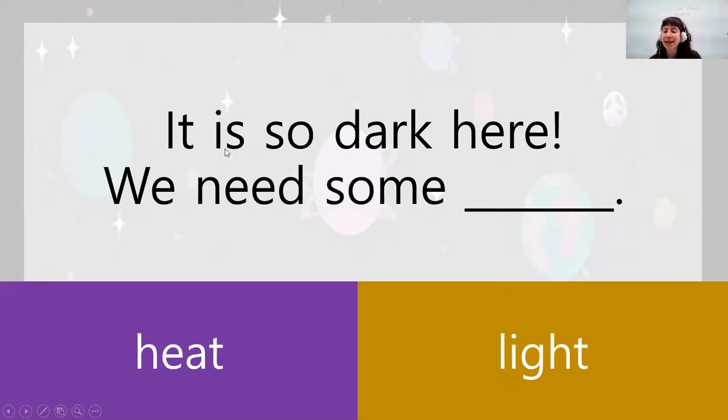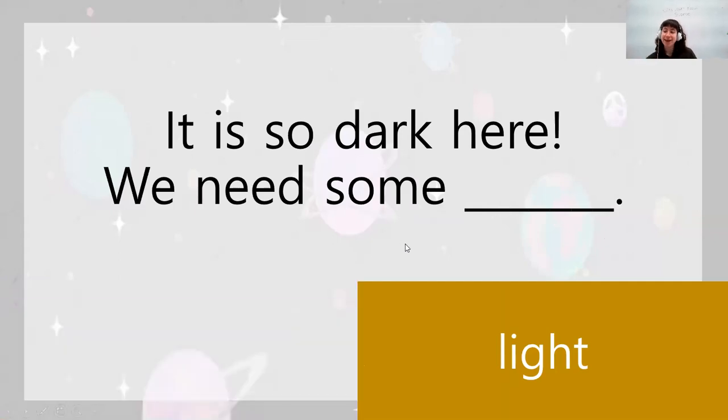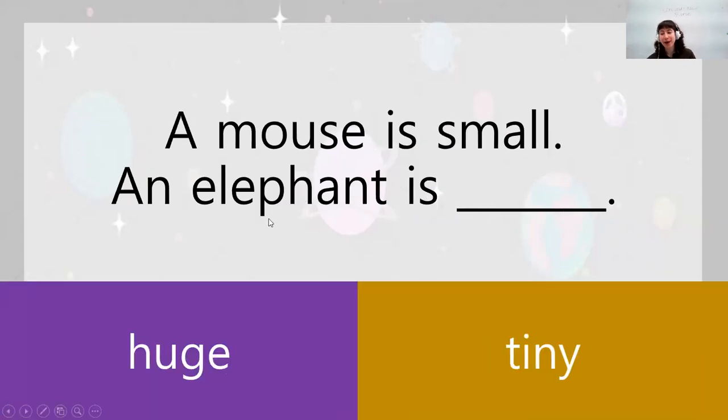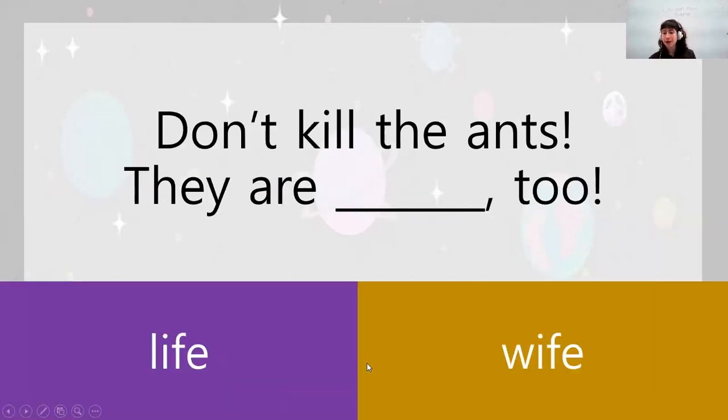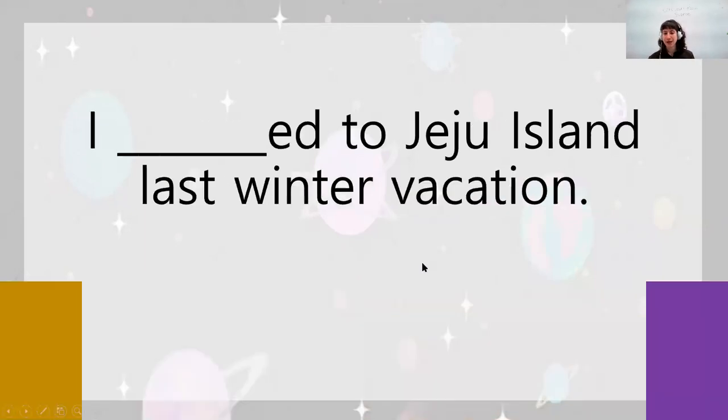So next one. It is so dark here. We need some heat or light. Three, two, one. Yeah. Next one. A mouse is small. An elephant is huge or tiny. Ready? Three, two, one. Huge. Don't kill the ants. They are life or wife. Are ants life or wife? Ready? Three, two, one. Life. Very good.